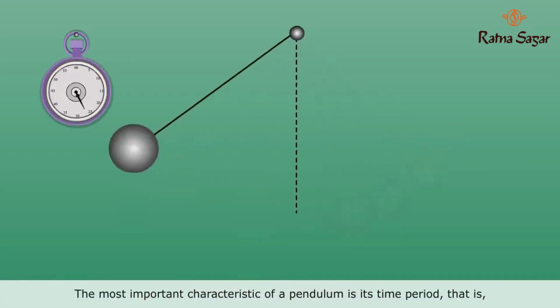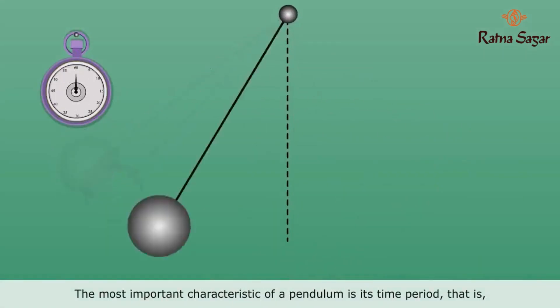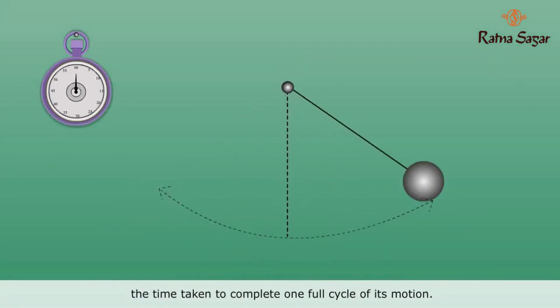The most important characteristic of a pendulum is its time period, that is, the time taken to complete one full cycle of its motion.